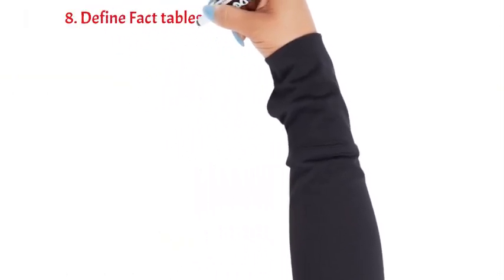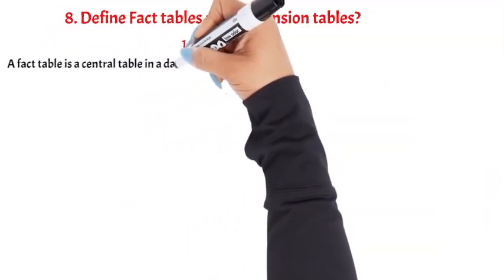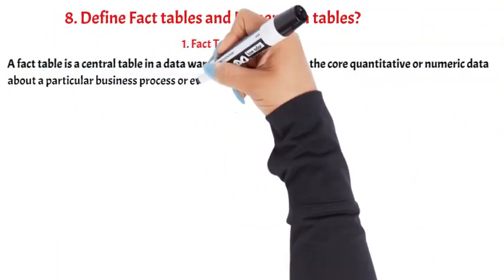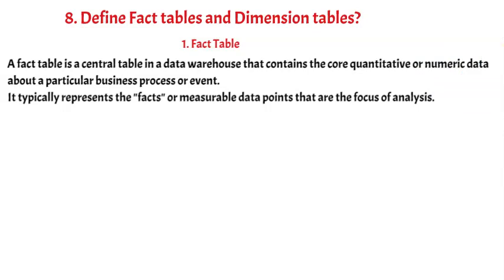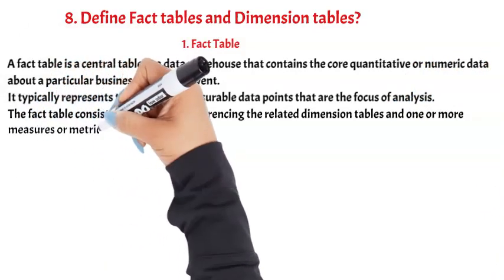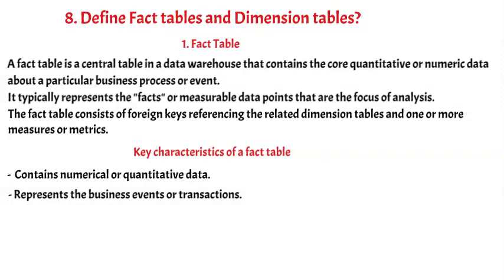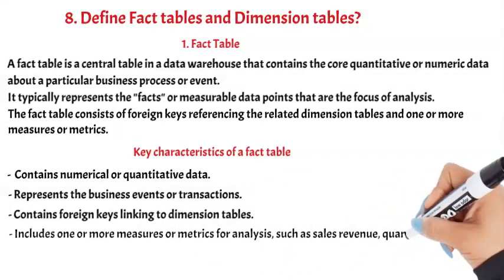Question 8: Define Fact Tables and Dimension Tables. A fact table is a central table in a data warehouse that contains the core quantitative or numeric data about a particular business process or event. It typically represents the facts or measurable data points that are the focus of analysis. The fact table consists of foreign keys referencing the related dimension tables and one or more measures or metrics. Key characteristics of a fact table: contains numerical or quantitative data, represents business events or transactions, contains foreign keys linking to dimension tables, and includes one or more measures or metrics for analysis, such as sales revenue, quantity sold, or profit.